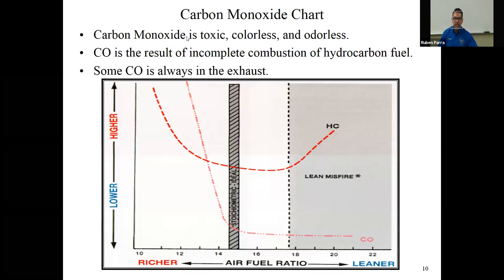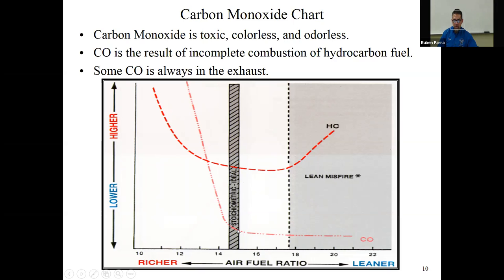The first gas we're going to talk about is carbon monoxide. Carbon monoxide is a toxic, colorless, odorless, very deadly gas — you'll never realize it's going into your lungs. CO is a result of incomplete combustion; there's always some CO in the exhaust. Looking at this chart, at the stoichiometric air-fuel ratio of 14.7:1, carbon monoxide is very low. The only situation that causes this gas to rise is as the mixture gets richer. A rich condition will always affect carbon monoxide.